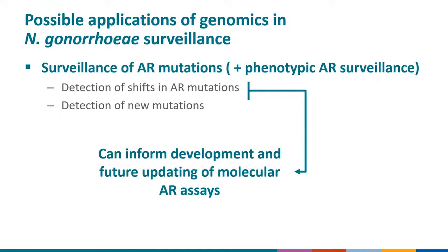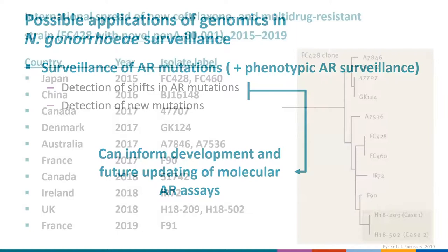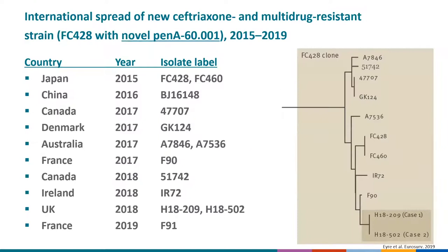One example of detecting a new resistance mutation is the identification of a ceftriaxone- and ciprofloxacin-resistant isolate labeled FC428, which had a novel penA gene causing ceftriaxone resistance later labeled penA60. After first being detected in Japan in 2015, the strain circled the globe, was detected in the countries listed on this slide, and was able to be retraced through sequencing of these isolates. The phylogeny on the right shows the close relatedness of these isolates.